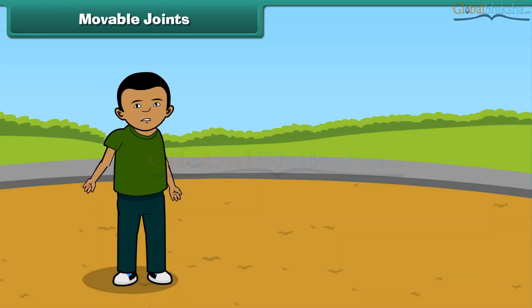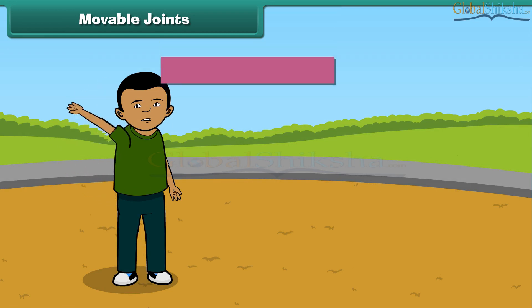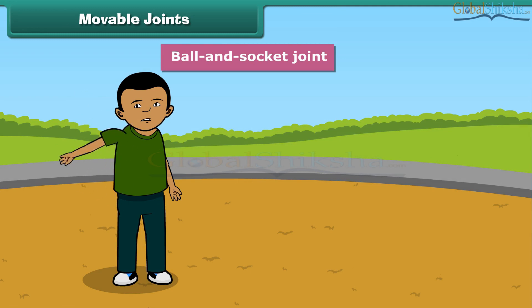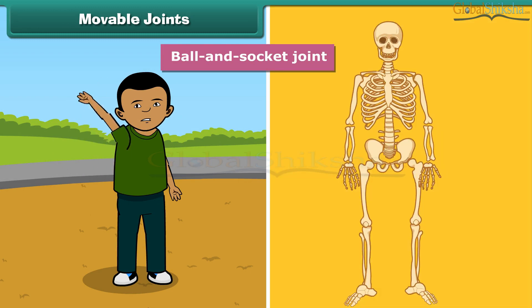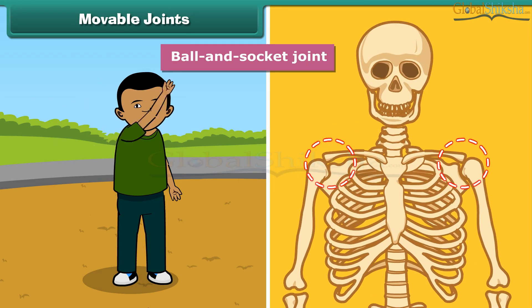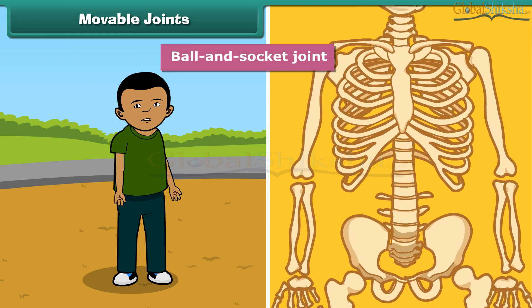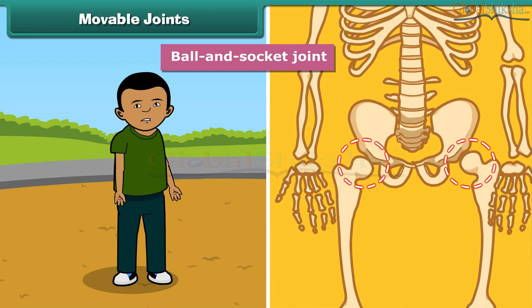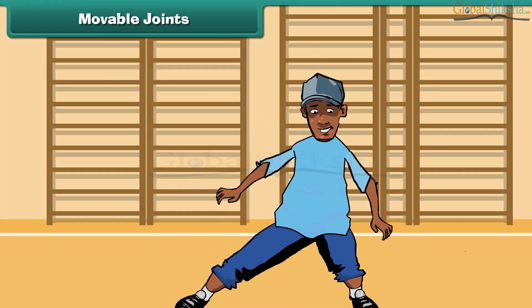The joints which join the bones to make circular movement possible are called ball and socket joints. For example, the bone in the upper arm is fitted to the bone in the shoulder by a ball and socket joint. Similarly, the thigh bone is fitted to the hip bone by a ball and socket joint.